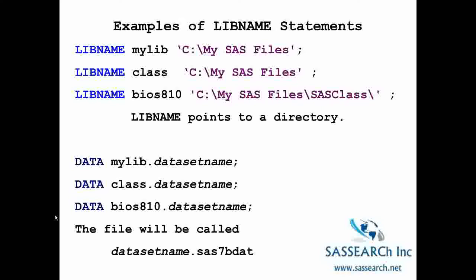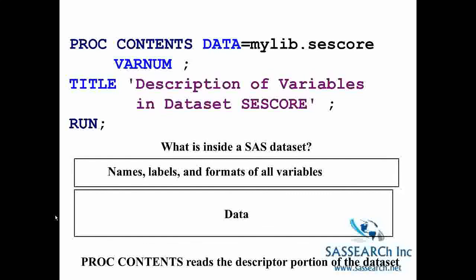If a researcher gives me a data set with the sas7bdat extension, I know I have a SAS data set. Usually the first thing I do when given a permanent SAS data set is run a proc contents on the data. For example: proc contents data=mylib.sesscore. We are looking for a SAS data set named sesscore stored in the directory referenced by mylib. Proc contents tells me the descriptor portion of the data set — the names, labels, and formats of all variables — but does not show the actual raw data.